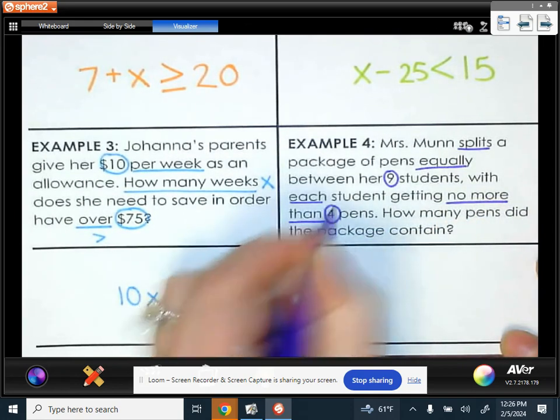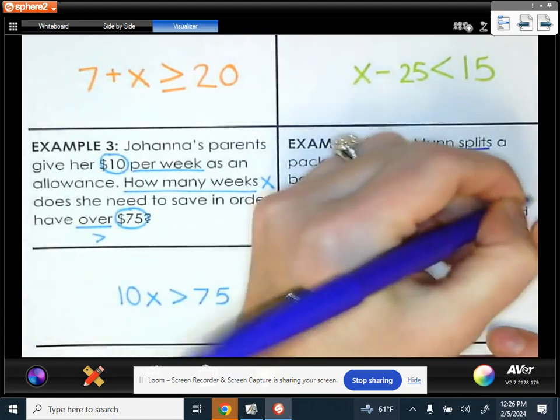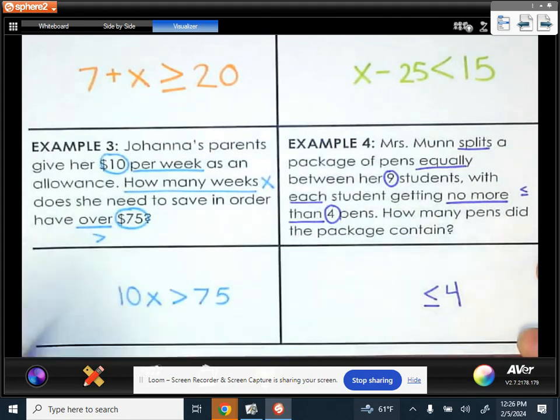And then it says no more than four pens. No more than is inequality language that means less than or equal to. So we know it's going to be less than or equal to four.